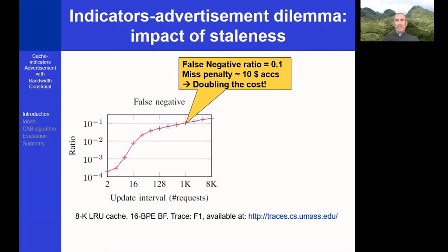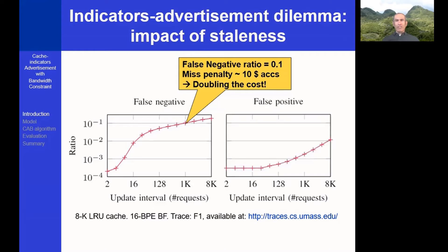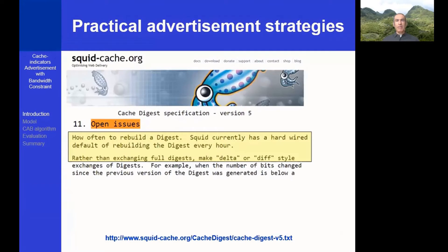Paying a penalty of 10 in 10% of the requests may translate to doubling the expected cost of a data access. We now see a similar plot, but for the false positive probability. The false positive probability increases with the update interval at a much lower slope. Not practical implementations of cache advertisements currently use some crude estimations and rules of thumb. For instance, the widely used SQUID cache advertises its content once in an hour, and indeed its spec relates to tuning the update interval and the indicator size as an open problem.